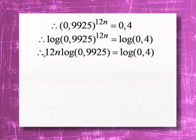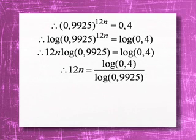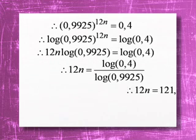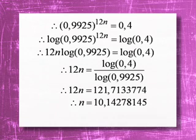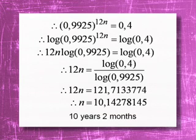Using the law of logarithms, we bring down the exponent 12n. Then we divide both sides by log of 0.9925. Working this out on your calculator gives approximately 121-point-something. We then divide both sides by 12, and the answer is 10 years and 2 months. It's a nasty little calculation, but the method is clear.